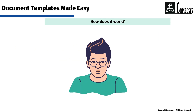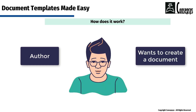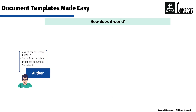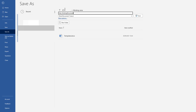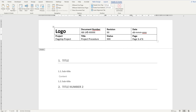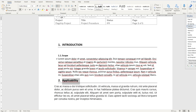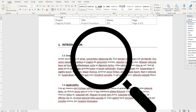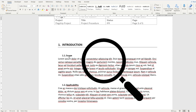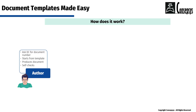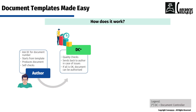This is Alex. Alex is a document author and wants to create a document. They'll start by asking their document controller for a document number. Then Alex will open the document template and save the new working document in the dedicated working area. Alex will modify what is required in the document's placeholders and produce the document itself. When happy with the document, Alex will go through it again, self-checking the formatting and the content.